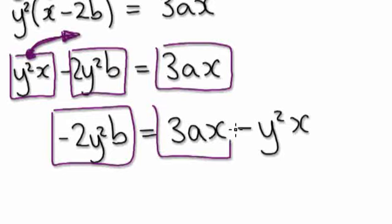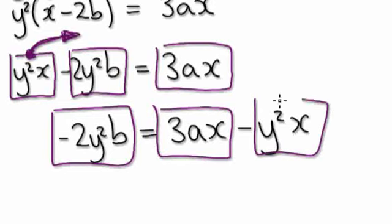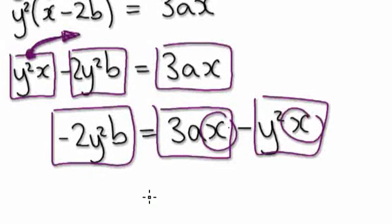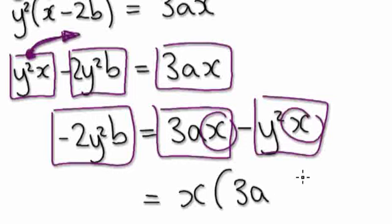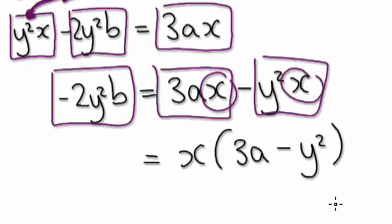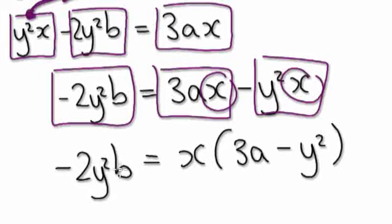Visualize as this: equals this, take away this. You can see x appears in here and in here, so you can factorize. Factorize it — this will become x bracket 3a take away y squared, close it. On the left hand side it remains the same: 2y squared b.